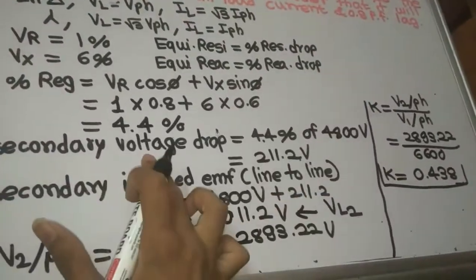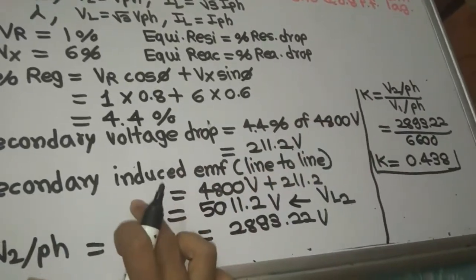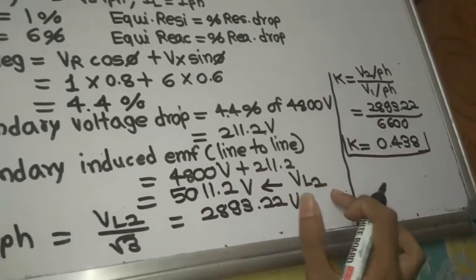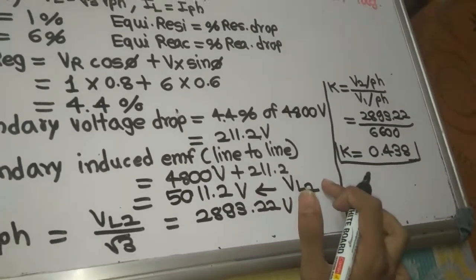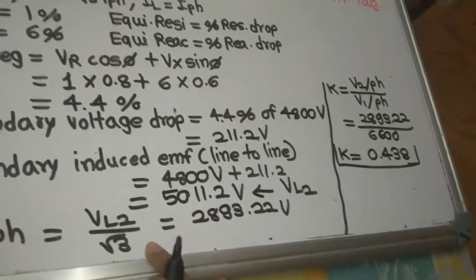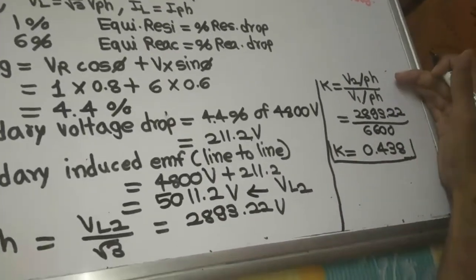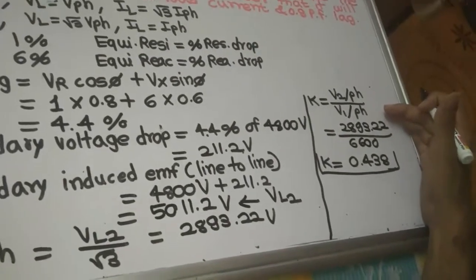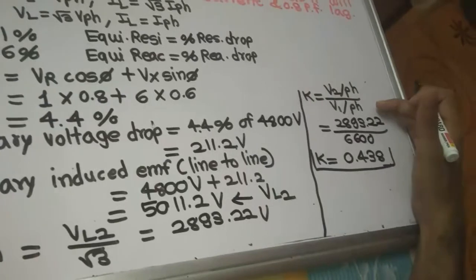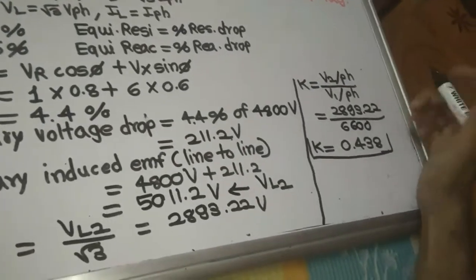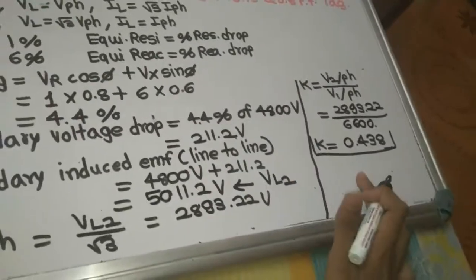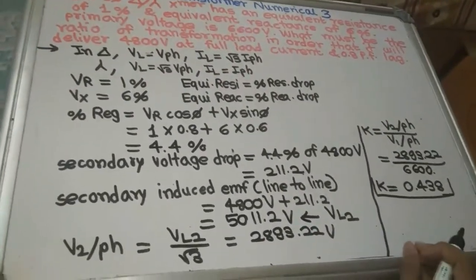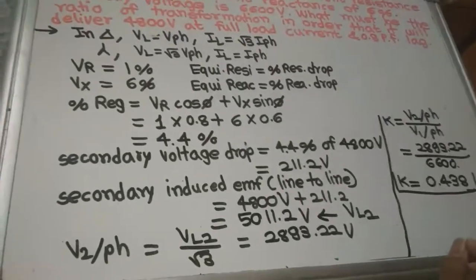To summarize: we first found the secondary voltage drop, added it to the output secondary voltage to get the secondary induced EMF (line), then found the per-phase EMF. For the primary, since it is delta-connected, the phase voltage equals the line voltage, which is 6600 volt. So K = 0.438. It is a very simple numerical — understand it well and there will be no doubt.